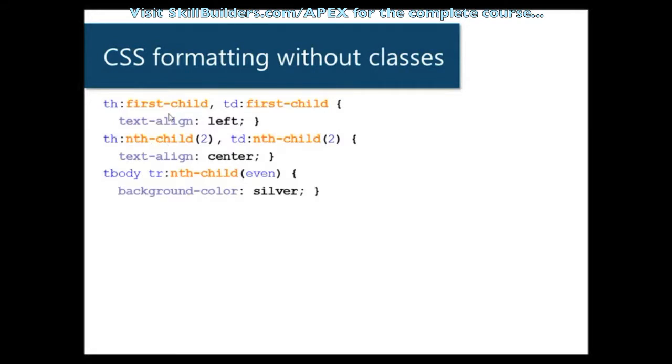Down here, a little bit more complex. First child just gets the first one. Nth child, you specify the number. You could say nth-child 1, and that would be the same as first child. But here, counting up from 1, we're going to 2. That's the second column. But we're doing the same thing. We're centering the second column.